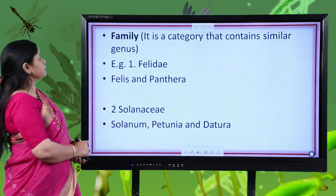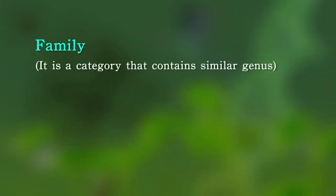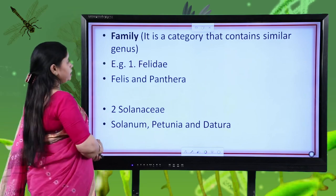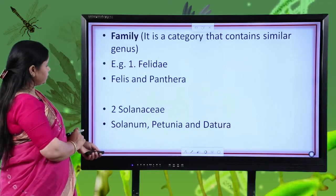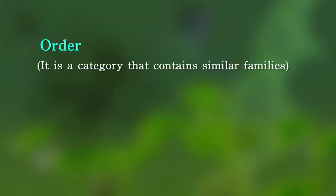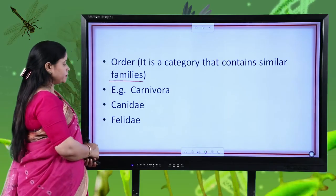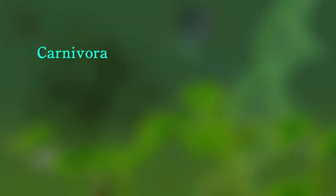The next taxonomic category is family. Family is the category that contains various genera. For example, family Felidae contains Felis and Panthera — Panthera contains wild cats and Felis contains small cats. In plants, family Solanaceae contains genera Solanum, Petunia and Datura. The next category is order — order contains families that share some common morphological characters. For example, order Carnivora contains two families: Canidae, the dog family, and Felidae, the cat family.